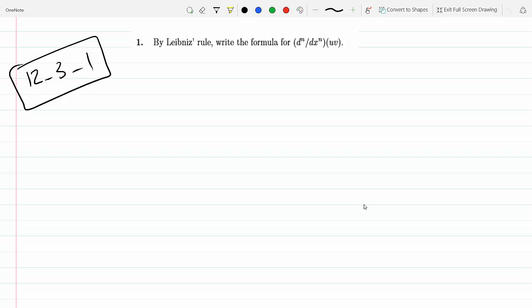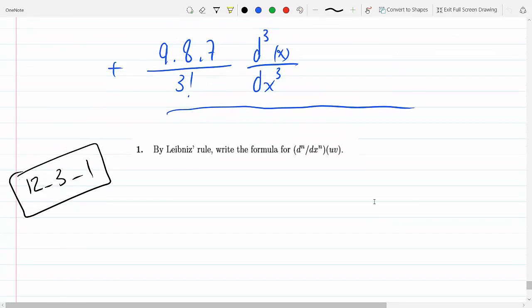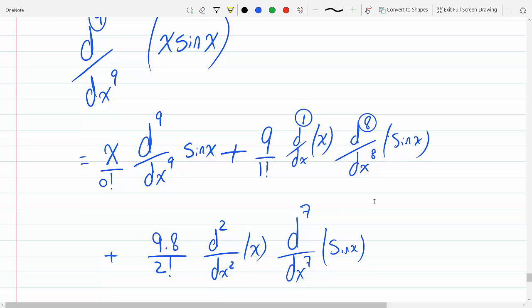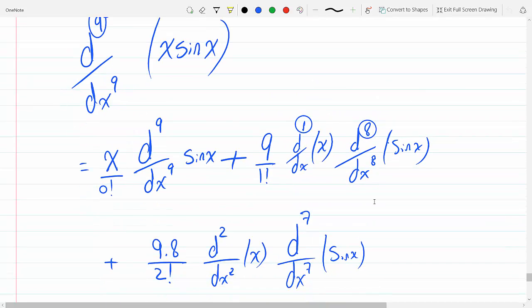Okay, so generally speaking, if we're going to write the formula for this using Leibniz rule, like we said on the previous question, the sum of the derivatives have to always add up to n here.